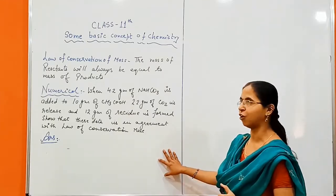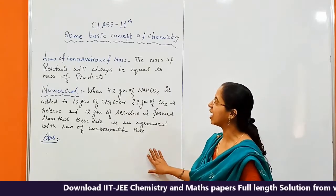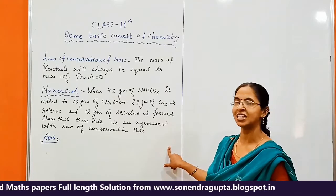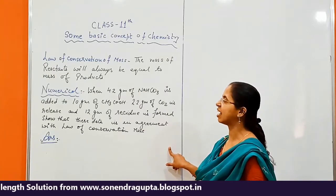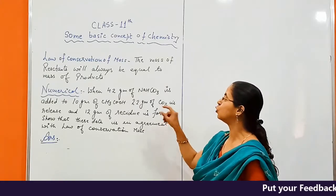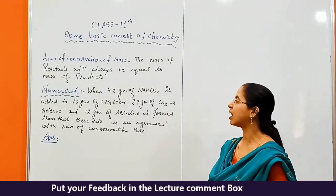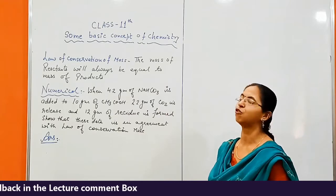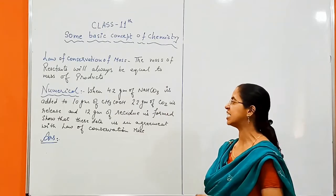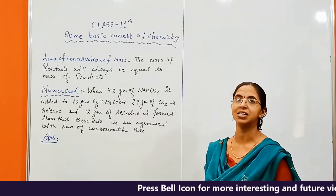Let us read the numerical first. When 4.2 grams of NaHCO3 is added to 10 grams of acetic acid, 2.2 grams of CO2 is released and 12 grams of residue is formed. We need to show that this data is in agreement with the law of conservation of mass.